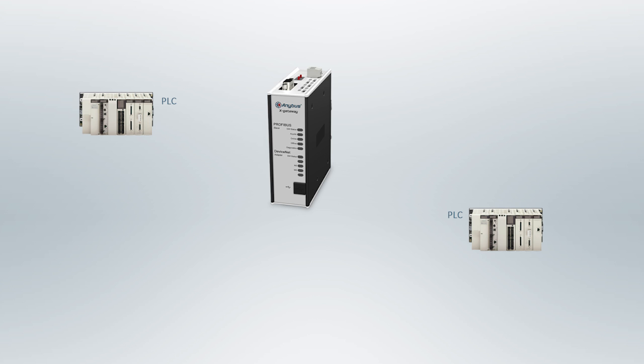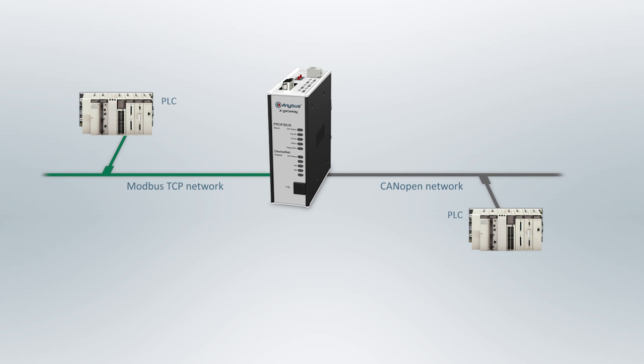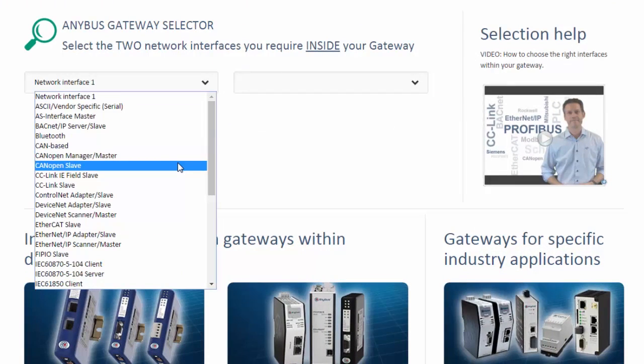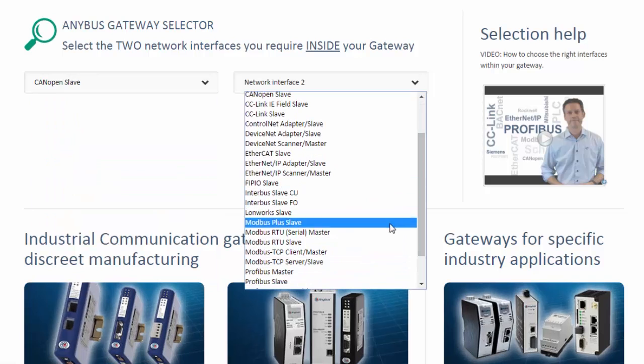In our second example, we have two Modicon controlling PLCs. We want to use a gateway to connect an older part of the factory which uses a CAN open network to a new part which has a Modbus TCP network. The solution here is an Anibus X gateway which is slave on both sides and simply sends the transparent IO data between the two networks. I choose my gateway on Anibus.com by selecting CAN open slave and Modbus TCP slave.